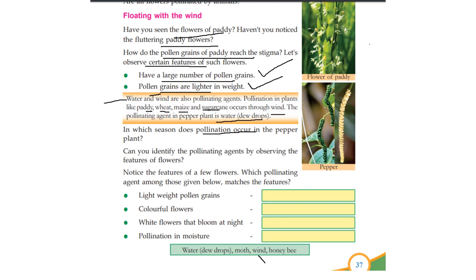Colorful flowers — the pollinating agent is honey bee. Flowers that bloom at night — the pollinating agent is moth. Moisture and dewdrops — the pollinating agent is water.